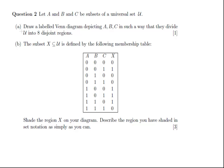In this presentation, we're going to look at set theory. The problem asks to draw a labeled Venn diagram depicting A, B, C, these are three subsets of the universal set U, in such a way that they divide U into eight disjoint regions.